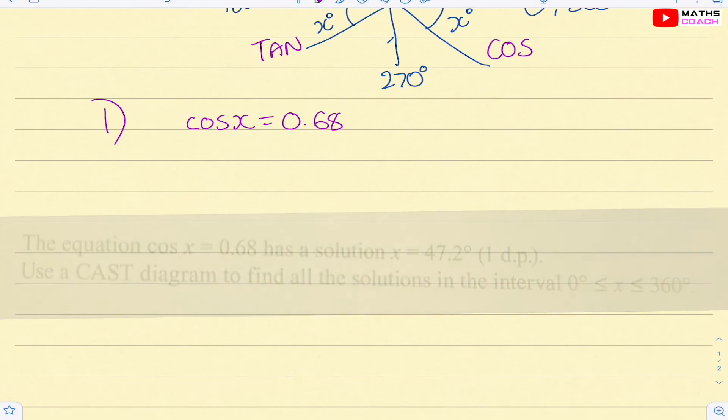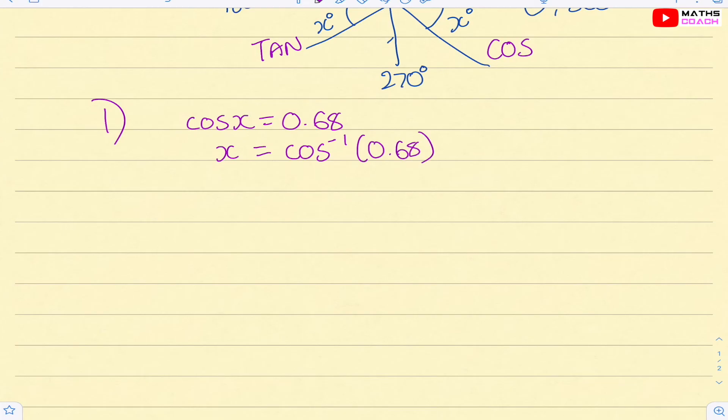So we said cos x was 0.68. Now we know that the inverse of cos is cos minus one. You do cos minus one of 0.68 in your calculator. Please make sure your calculator is actually in degrees, not in radians. So x should give you 47.2 degrees to one decimal place.